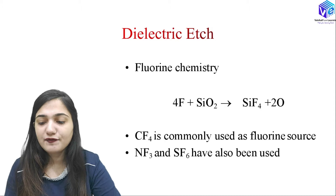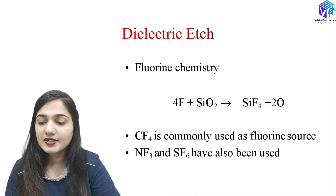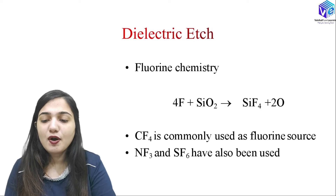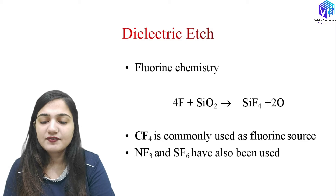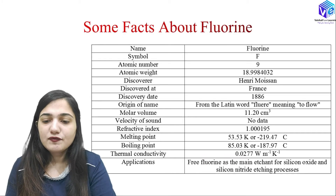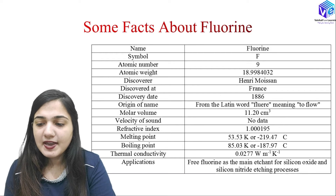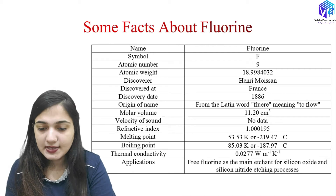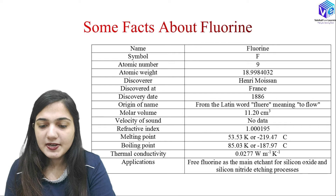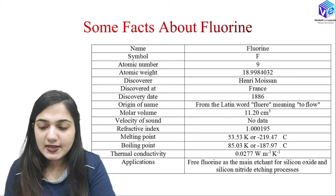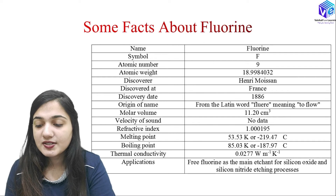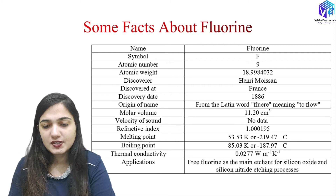To etch silicon dioxide, fluorine reacts with SiO2 to form SiF4, which is easily removed from the surface as it is a gas, generating oxygen as a byproduct. For the generation of fluorine, CF4 is commonly used as a fluorine source; NF3 and SF6 can also be used. Fluorine has the symbol F, atomic number 9, atomic weight approximately 18.99, and was discovered by Henri Moissan in France in 1886. It is used as the main etchant for silicon oxide and silicon nitride etching processes.